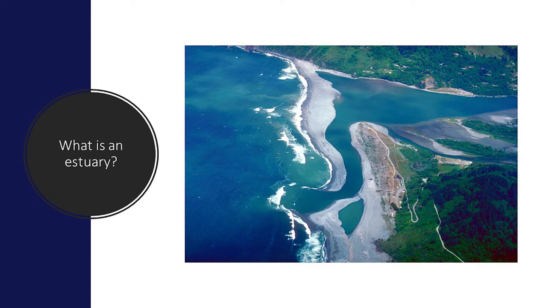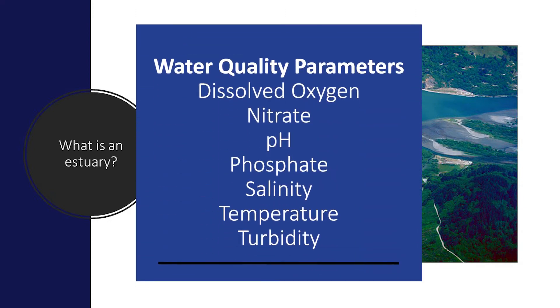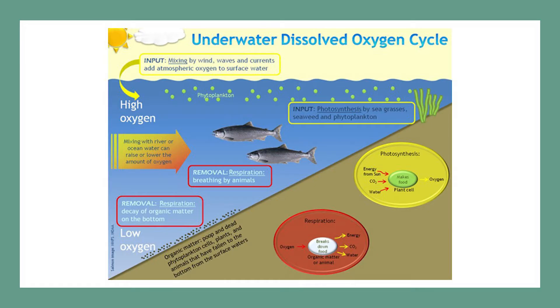Scientists conduct tests on water samples from the Puget Sound. Some of the water quality parameters are dissolved oxygen, nitrate, pH, phosphate, salinity, temperature, and turbidity.